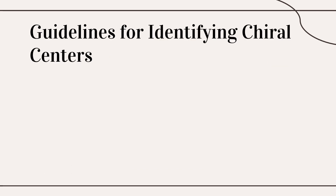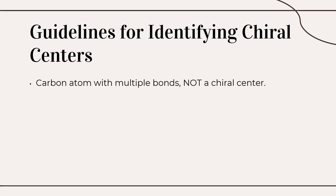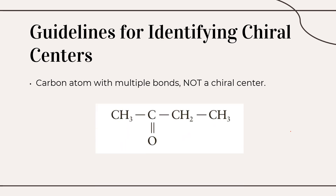What are the guidelines for identifying chiral centers? First, carbon atoms with multiple bonds do not have a chiral center. In this example, carbon has a multiple bond, meaning there are only three groups bonded to it rather than four. Therefore, this carbon is not a chiral center.